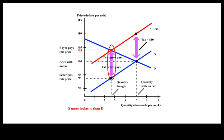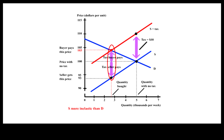Let's see a side-by-side comparison. On the left, supply and demand are equally elastic — buyer and seller pay equal share of the tax. On the right, supply is more inelastic than demand, so sellers pay a larger share.